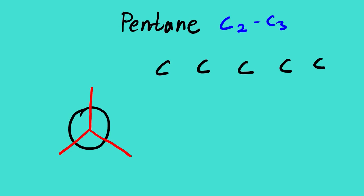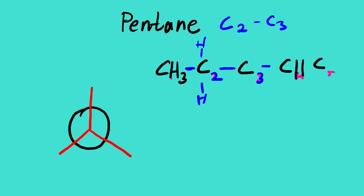This is carbon 1, 2, 3, 4, 5, so we are going to view through C2 and C3. For carbon number one we have CH3. Carbon number two is bonded to a methyl group and has two hydrogens. Carbon number three is bonded to an ethyl group (CH2CH3) and also has two hydrogens.